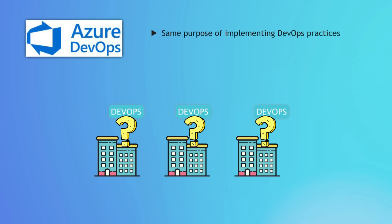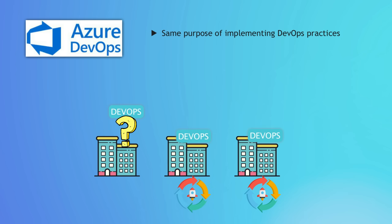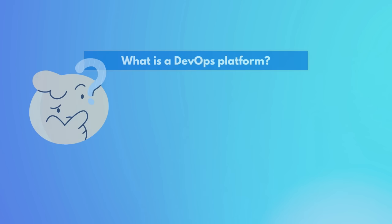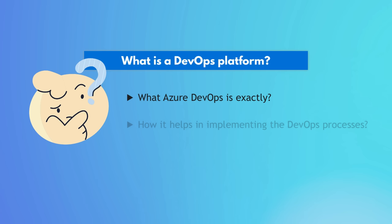Since DevOps became more mainstream and is now used in lots of projects worldwide, it was actually renamed to Azure DevOps, which is smart because DevOps is already a popular term. Everybody knows what it is, so just by the name you know it's a platform for DevOps. But it still sounds too general — DevOps is many things. So let's look at what Azure DevOps is exactly and how it helps us implement DevOps processes.